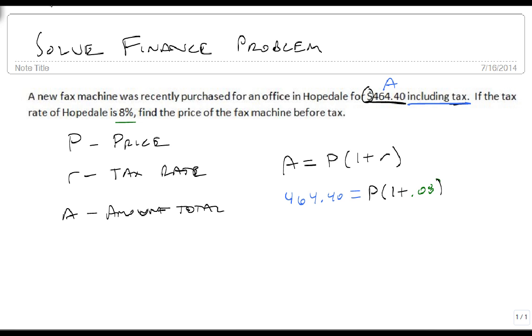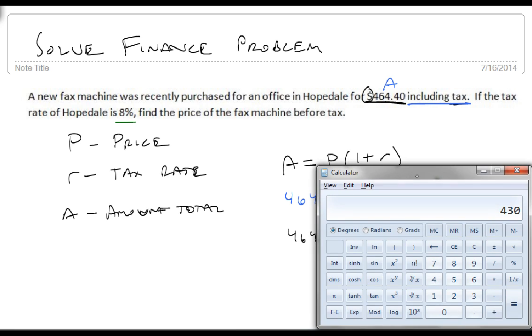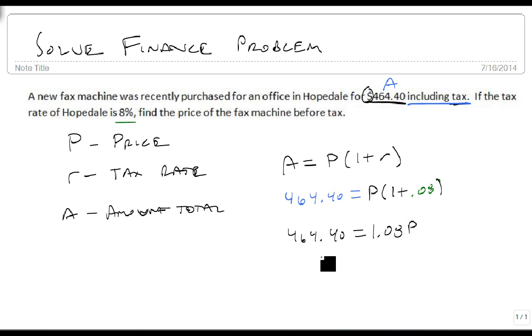Well, that's 1.08, so 464.40 equals 1.08 P. So we get out our calculator, 464.40 divided by 1.08 gives us 430. So P equals $430.